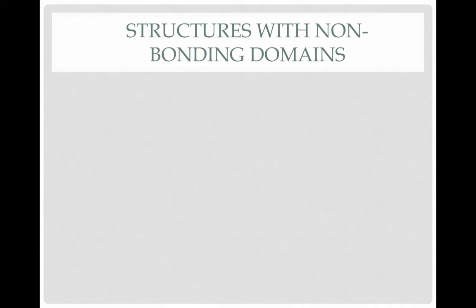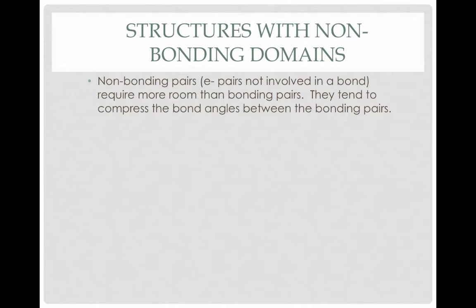Often when we draw a Lewis structure, we see that there are some non-bonding domains on the central atom — structures that have lone pairs on the central atom rather than bonds. Non-bonding pairs require more room than bonding pairs; there's more repulsion. This tends to compress the bond angles between the bonding pairs and make them a smaller angle, resulting in some new structures.